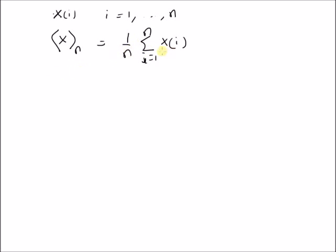We can rewrite this definition as 1 by n times summation of j equal to 1 to n minus 1, x(i) plus x(n).